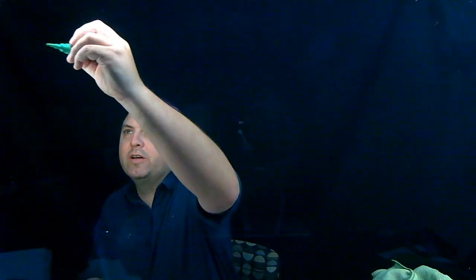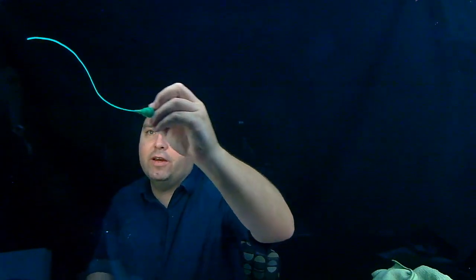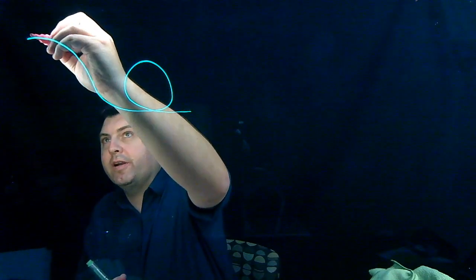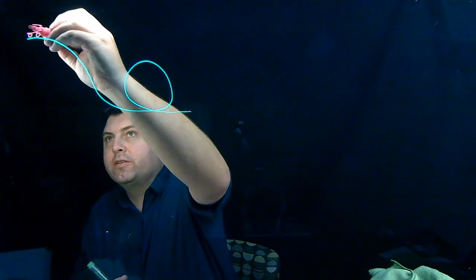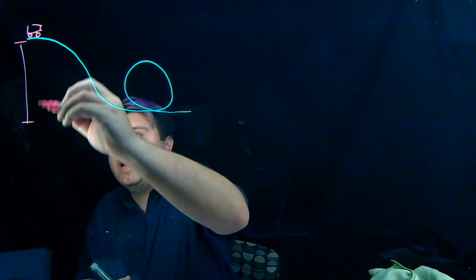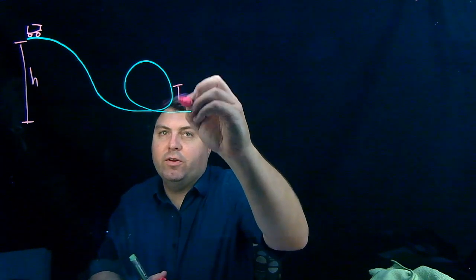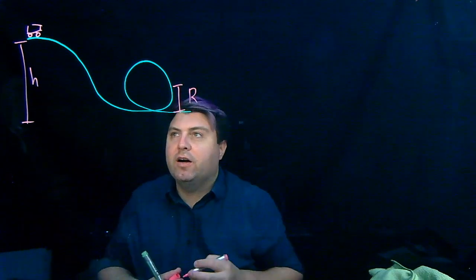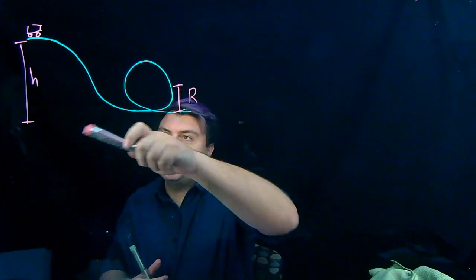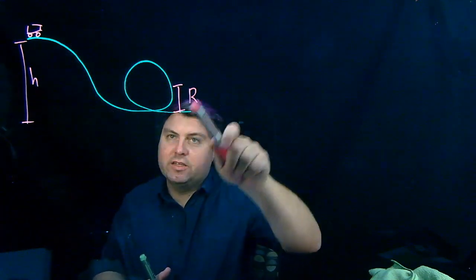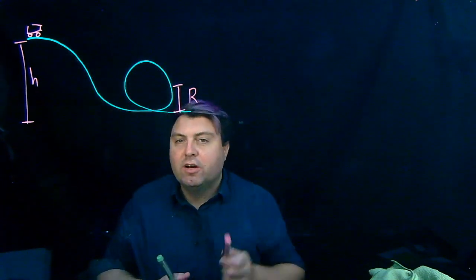We're going to try a sample problem in which we need energy but also another framework. Let's look at a problem of a roller coaster with a big loop-de-loop. The roller coaster car starts at a specific height h, the loop has radius r, and we want to know what is the minimum height h for the cart to safely go all the way around.